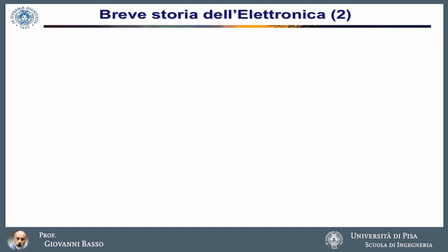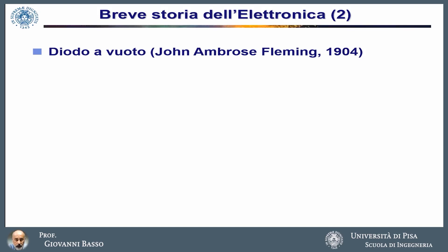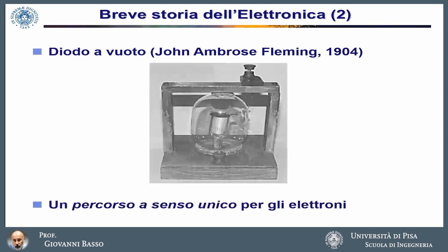The first electronic device is the empty tube, invented by John Fleming at the beginning of the 20th century. The empty tube has the aspect of a lamp. It is created by a glass bulb in which a vacuum is made, and is equipped with two terminals which are called anode and cathode. The particularity of the diode consists of the fact that it is possible to make a current flow through the device from the anode to the cathode, but not in the opposite direction. So we could say that the device constitutes a kind of one-way path for the electrical charges.